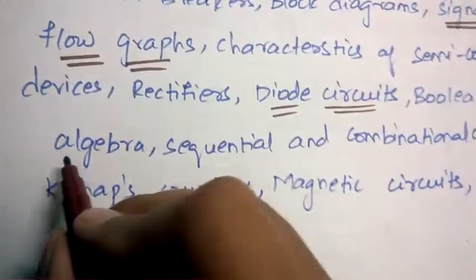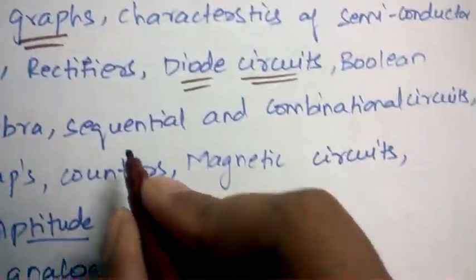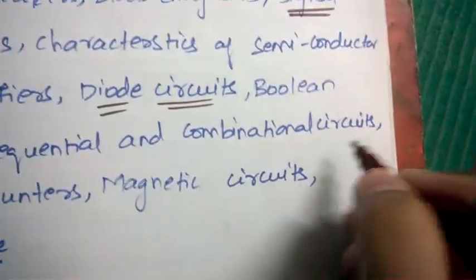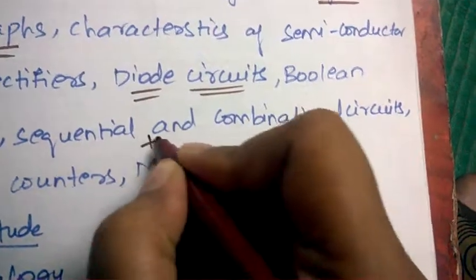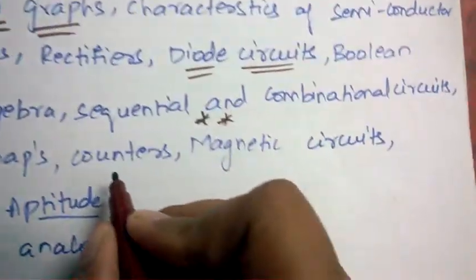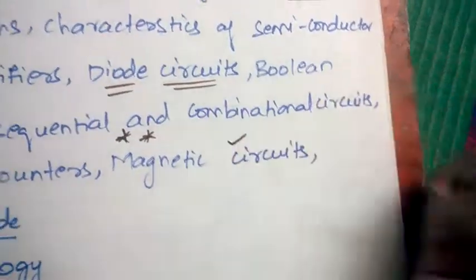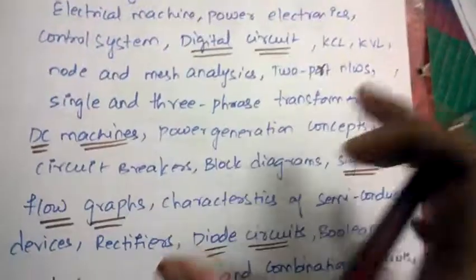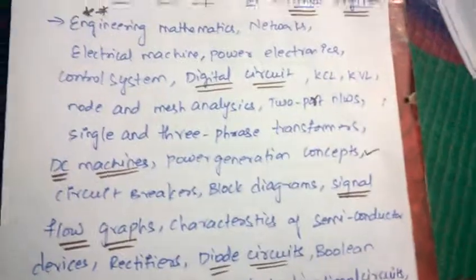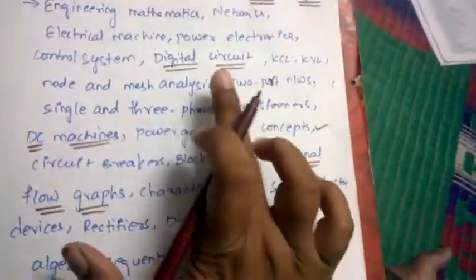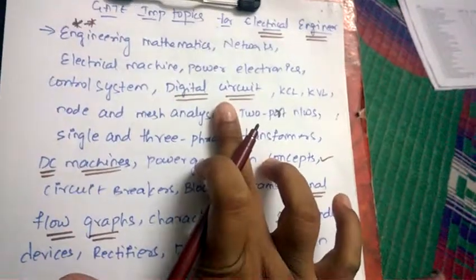Boolean algebra, sequential and combinational circuits - this is also important. Maps, counters, and magnetic circuits. Coming to these topics, they are all very very important topics, out of which concentrate more on engineering mathematics, digital circuit, DC machines, signal flow graphs, diode circuits and magnetic circuits.